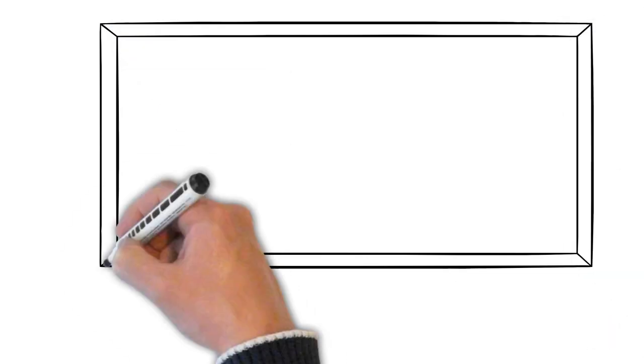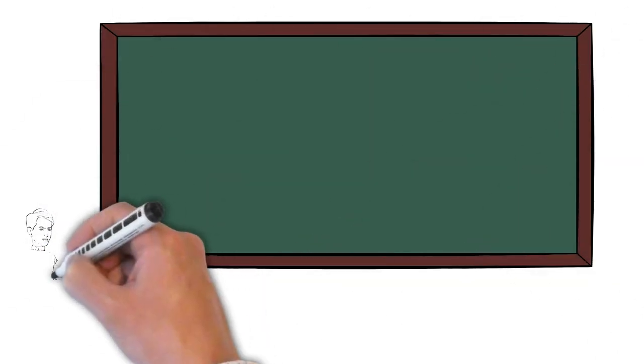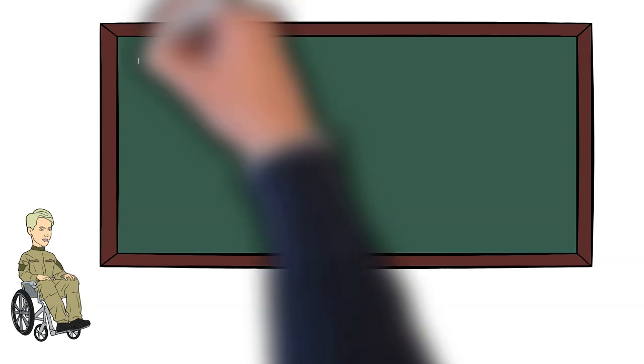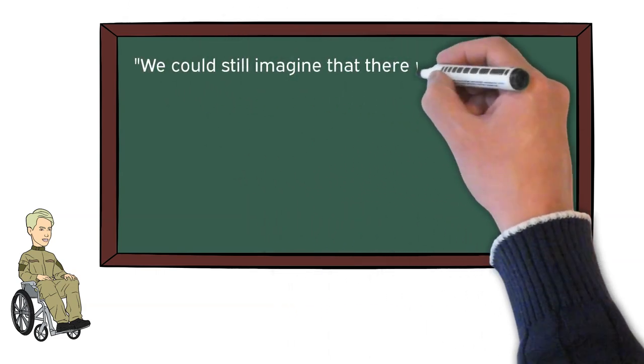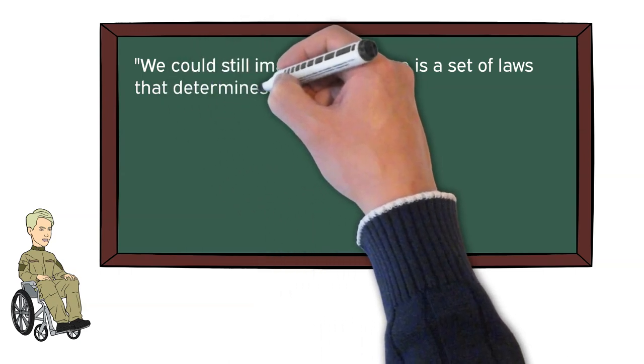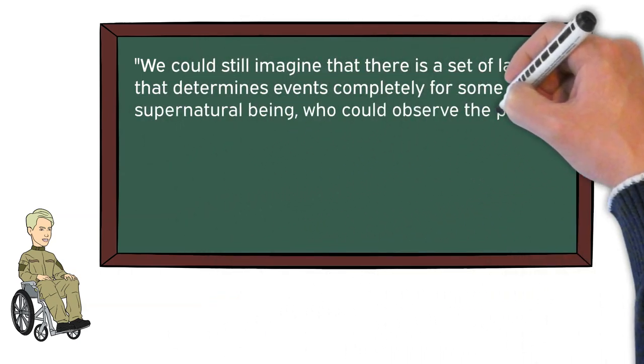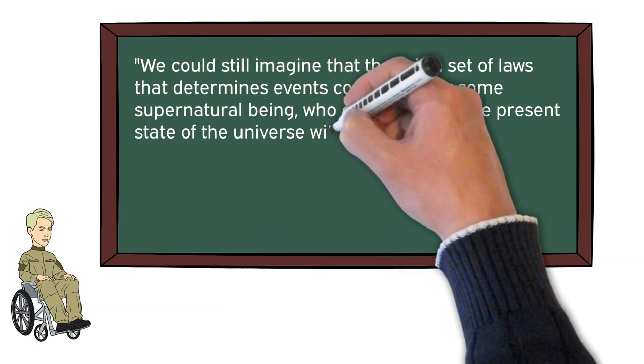Occam's razor has shown itself useful well into modern times, as another scientist, Stephen Hawking, said in A Brief History of Time: We could still imagine that there is a set of laws that determine events completely for some supernatural being who could observe the present state of the universe without disturbing it.